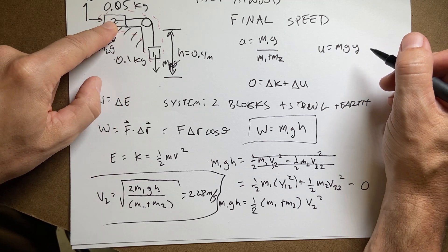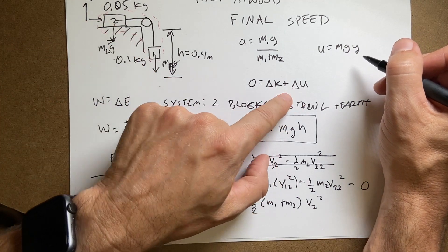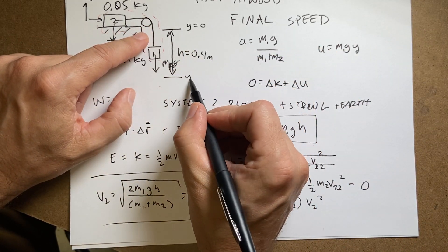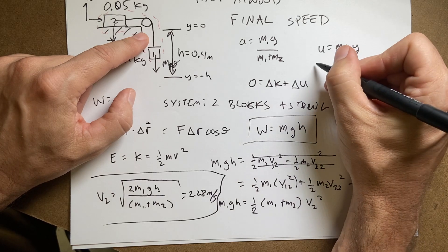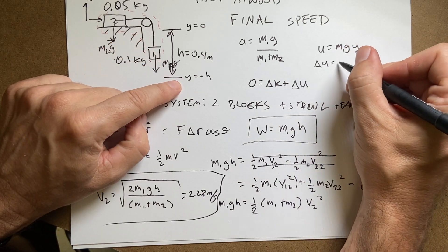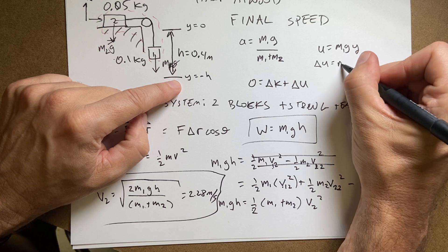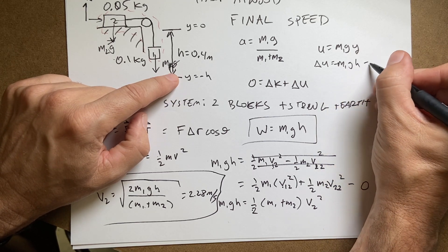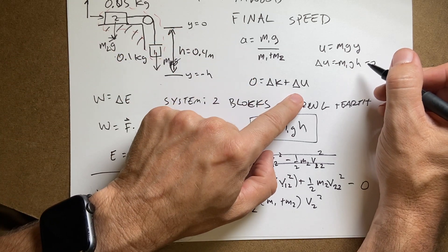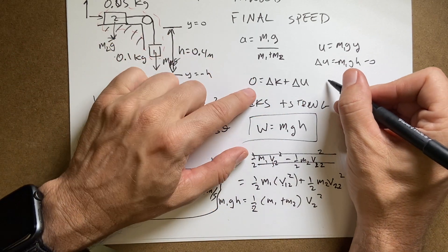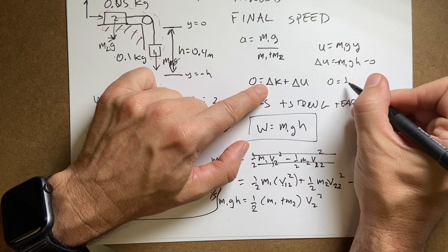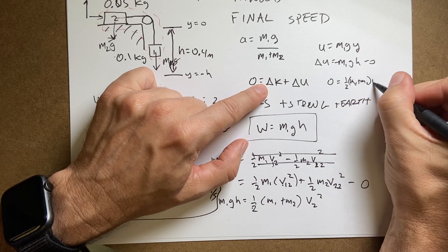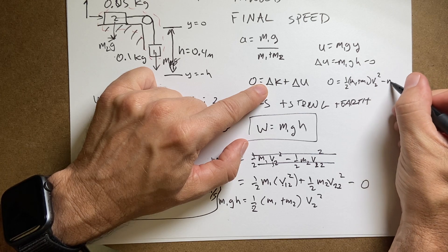Right, because this one doesn't change potential, it doesn't change height. So if this one starts here at y equals 0 and ends at y equals negative h, then delta u is going to be the final potential of negative h, which is going to be negative m1gh, and then it's going to be minus 0 up there. And then when I put that in over here, I'm going to get 0 equals the final kinetic energy, one-half (m1 plus m2) v2 squared minus m1gh.